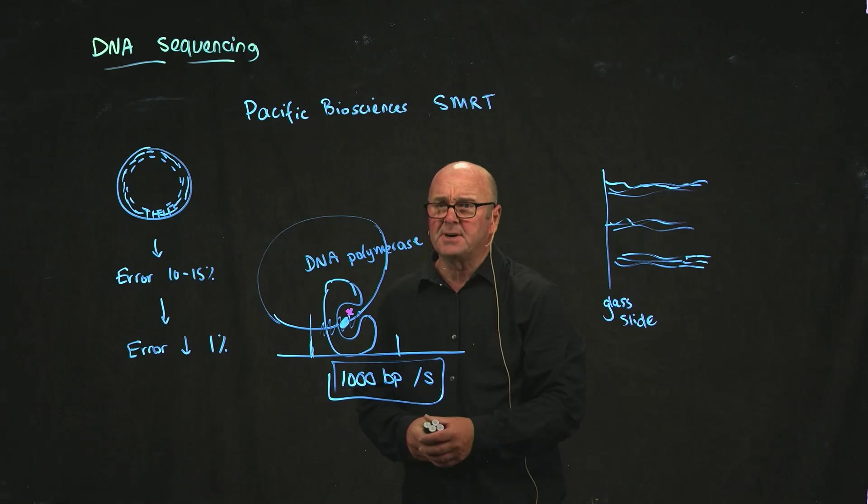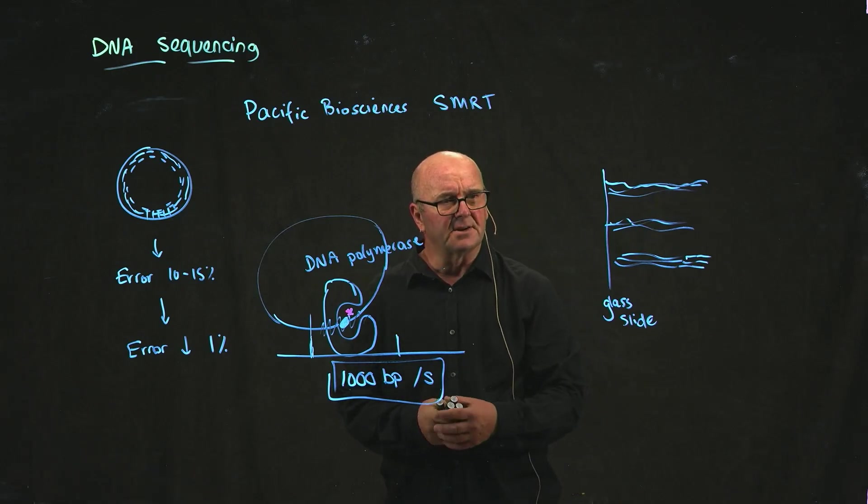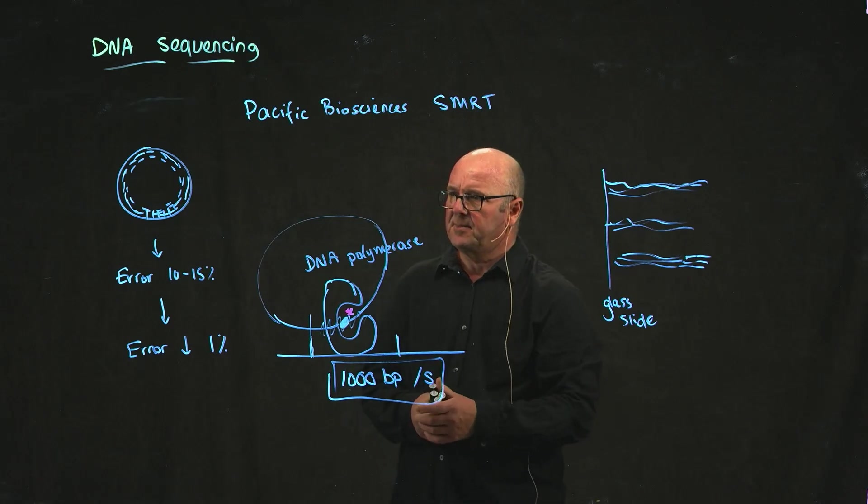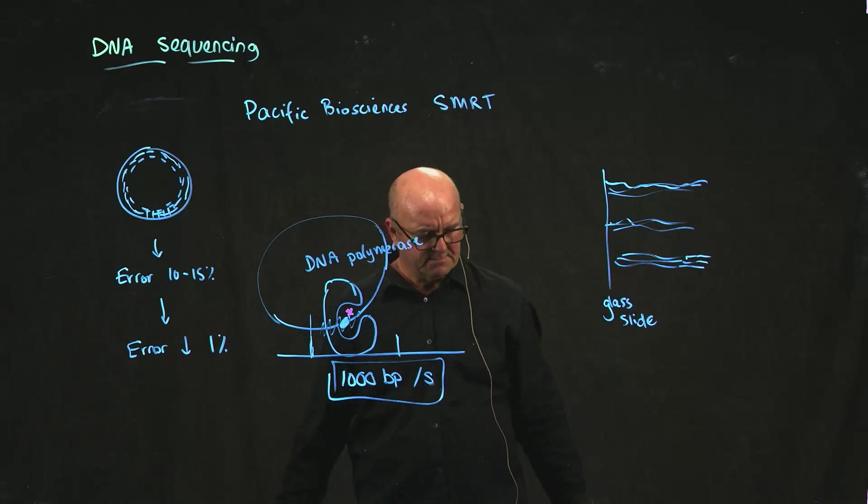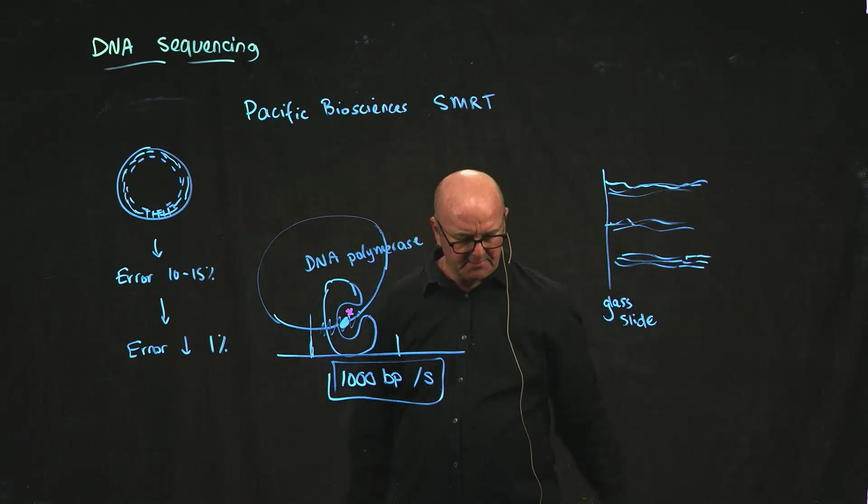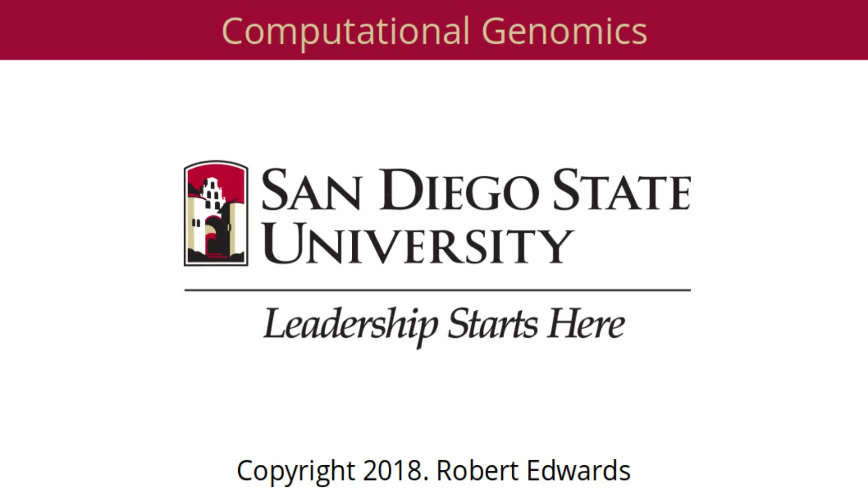The main problem with PacBio sequencing is the machine is on the order of half a million to a million dollars, so it's pretty expensive to get one up and running. And it's about the size of this table area - it's pretty big.